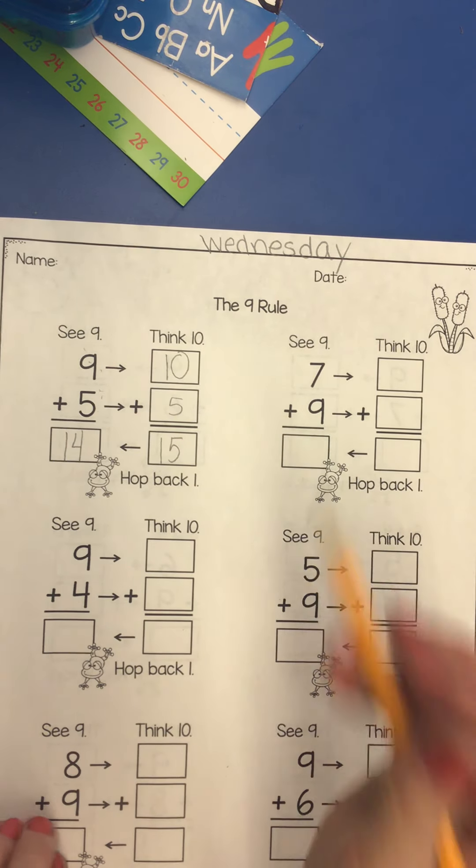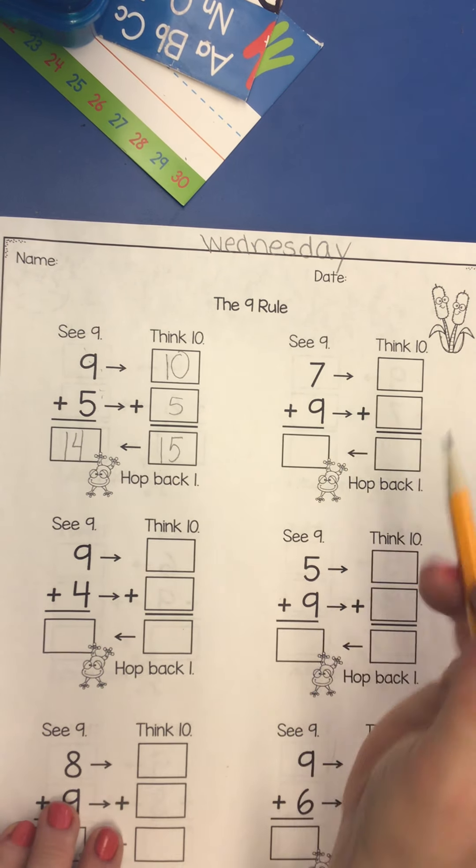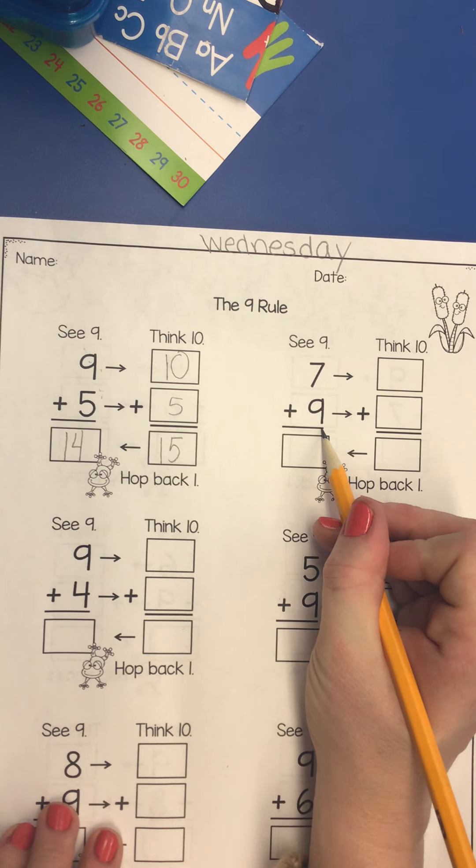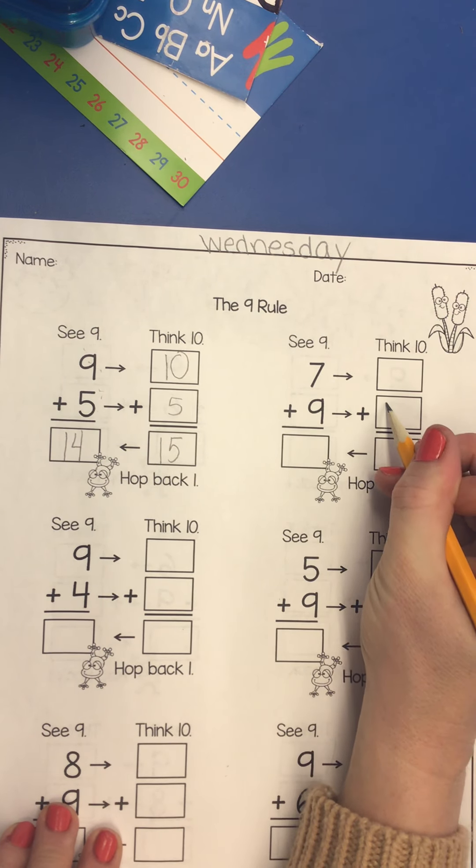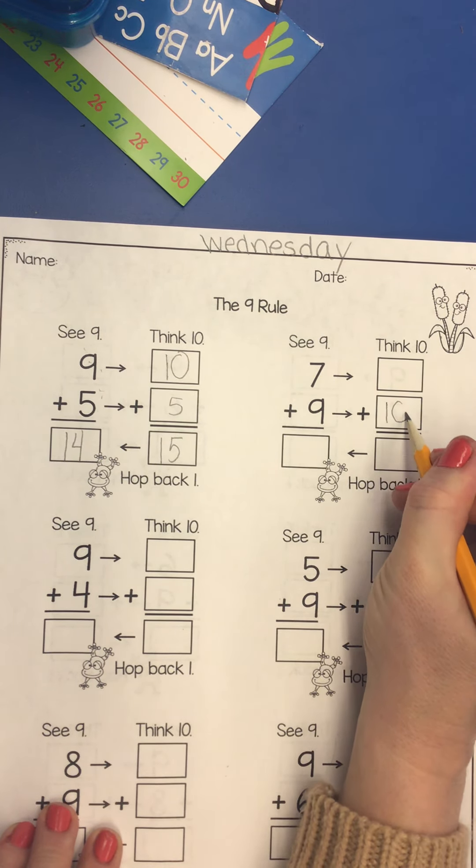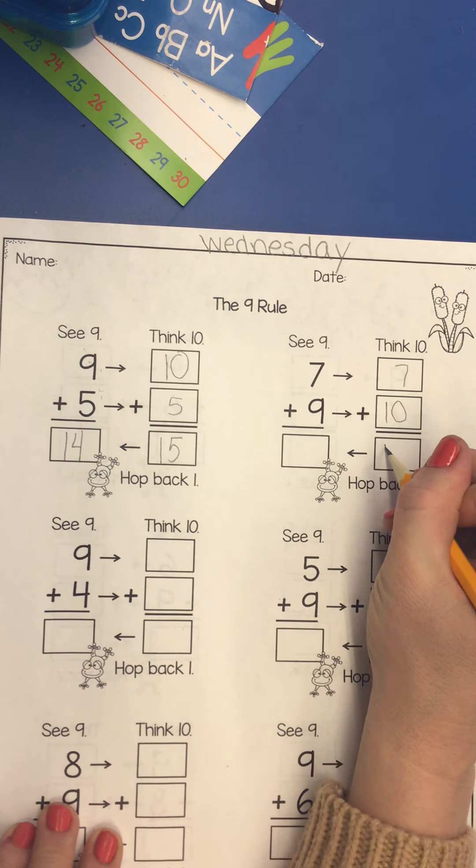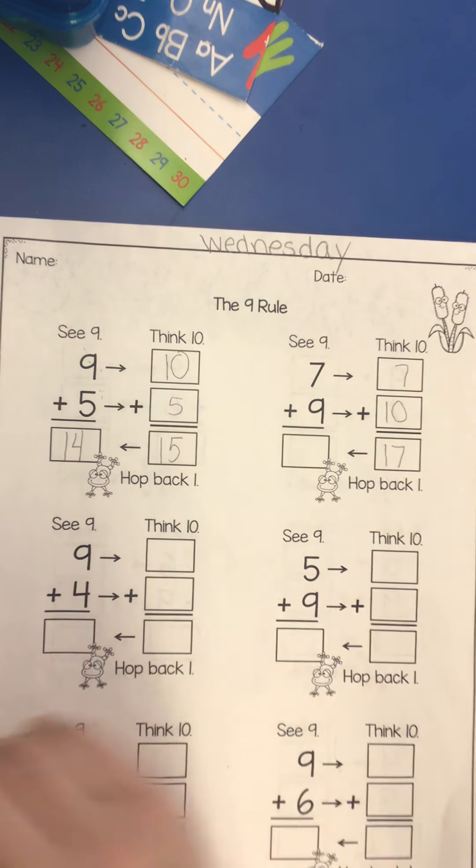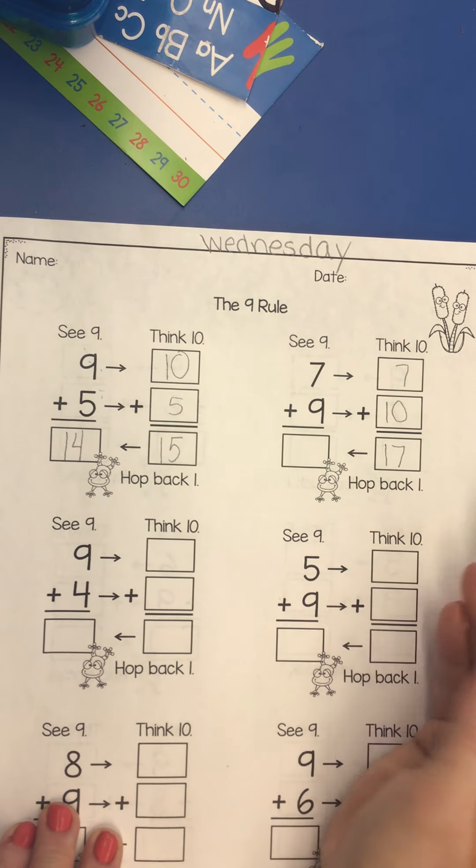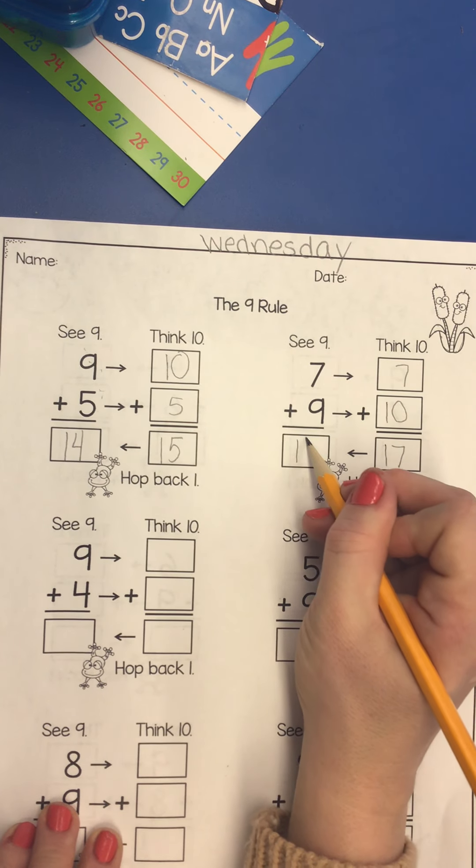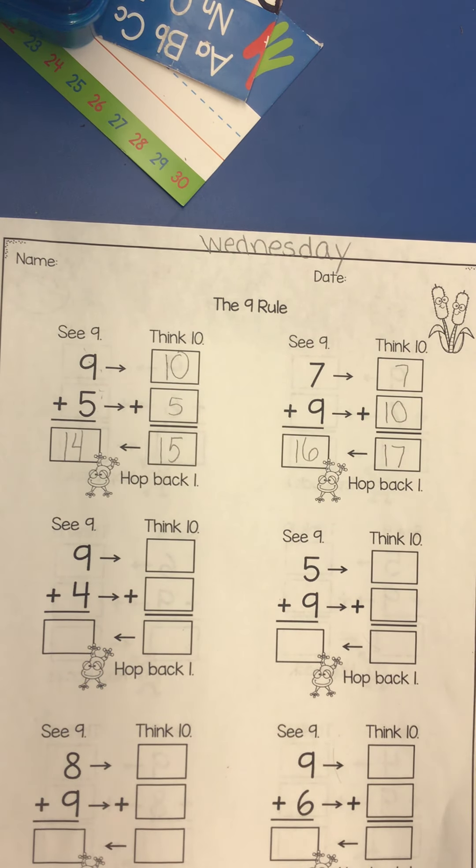So every single time you see a nine, let's go to the next one. See nine, but let's think 10. Bring my seven over. 7 + 10 is 17. There's your frog. Hop back one. The answer is 16.